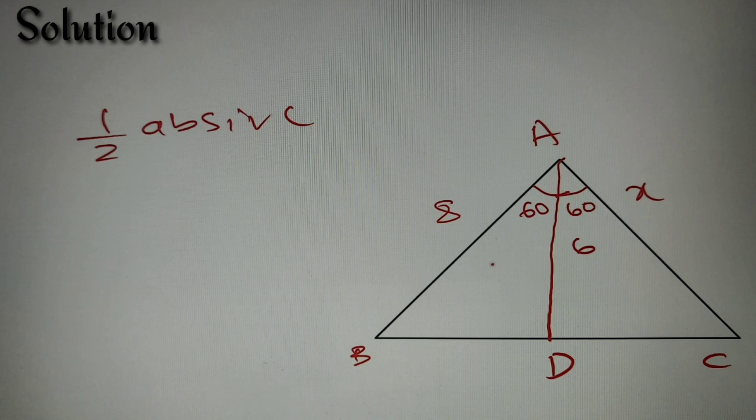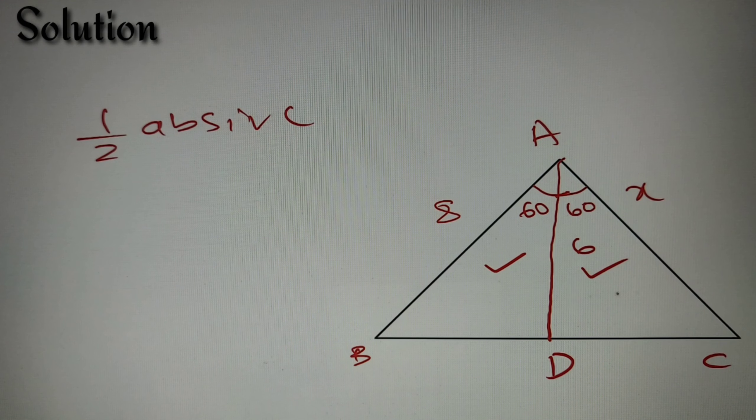So we know that area of triangle ABD plus area of triangle ADC is equal to the area of the complete triangle ABC. So by using this equation we can find the value of X, that is the length of AC. So let's proceed with the solution.